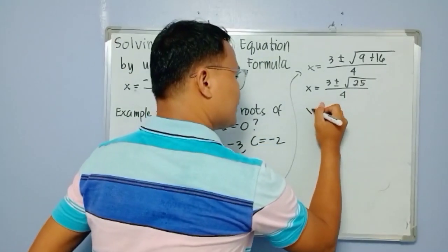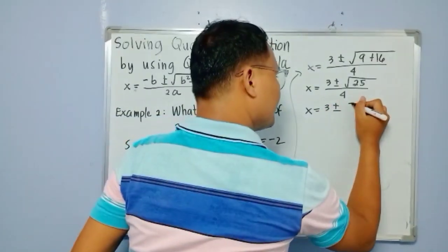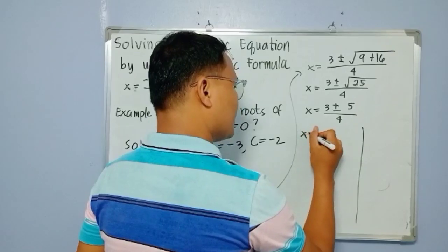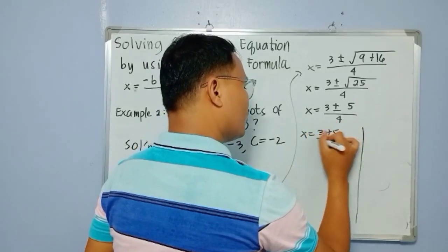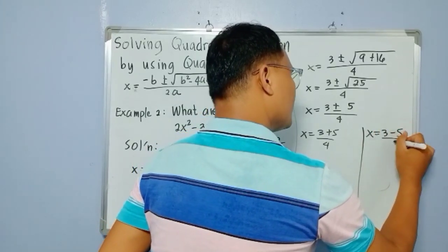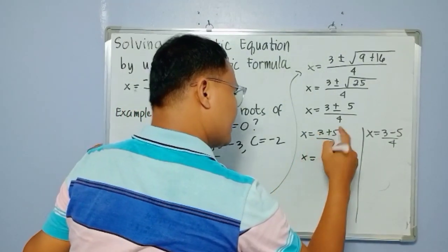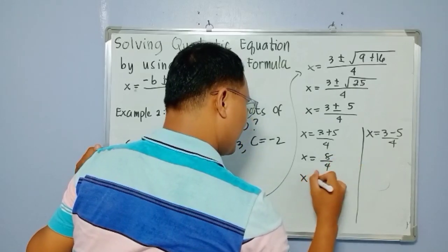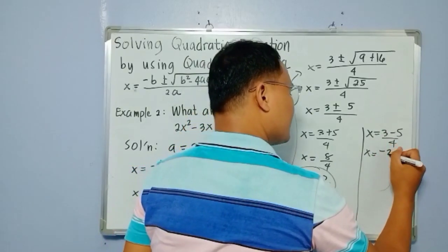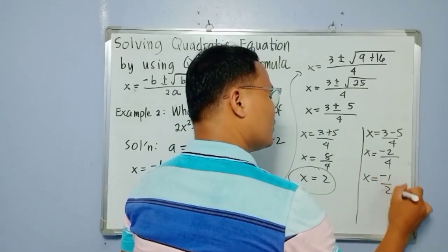So x equals 3 plus and minus 5, all over 4, since the square root of 25 is 5. We have two values: x equals 3 plus 5 over 4, and x equals 3 minus 5 over 4. That gives 8 over 4 equals 2, and 3 minus 5 is negative 2 over 4, so x equals negative one half.